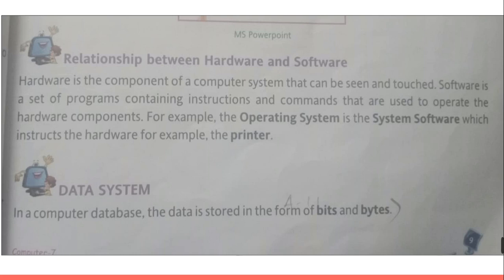For example, commands to a printer to print something, to a monitor to display something, to a scanner to scan something, or to a CD or DVD writer to play a DVD or CD. The operating system manages the memory of your computer. Hardware and software work in combination with one another — both are required to make a complete computer system.